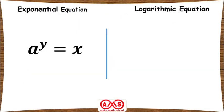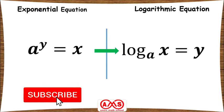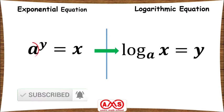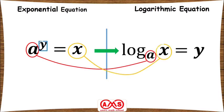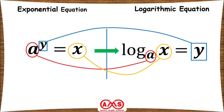In general, if we want to write a to the power y equal to x in logarithmic form, we write log base a of x equal to y. Here a is written as the base of the logarithm, x is written here, and y is here. So log base a of x equal to y is the logarithmic equation form of a to the power y equal to x. This is the exponential and logarithmic equation conversion formula.